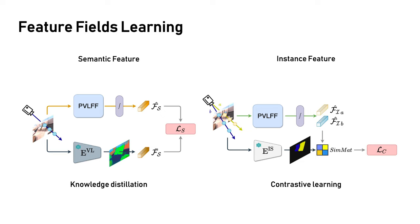For instance feature learning, we predict a rendered instance feature for every pixel. With the instance masks pre-computed by SAM, we apply a contrastive loss to encourage features within the same instance to be close, while pushing away features from different instances.